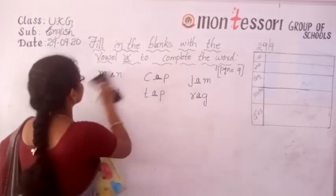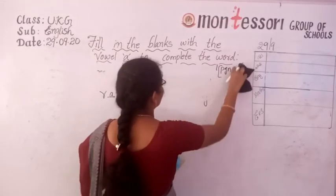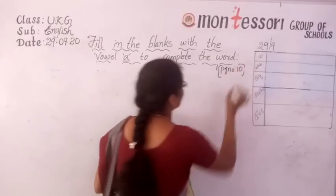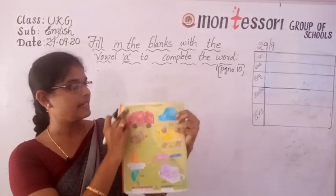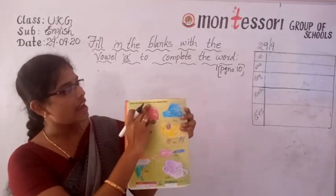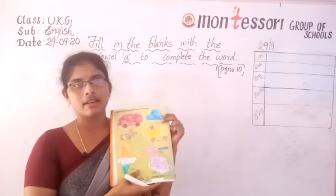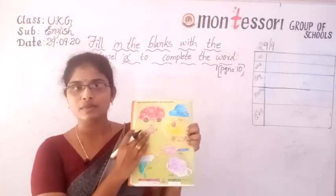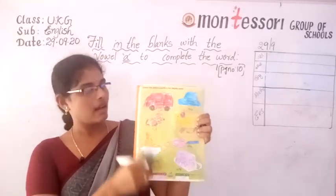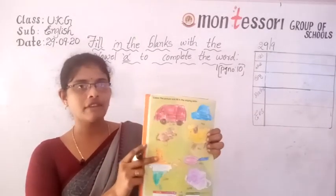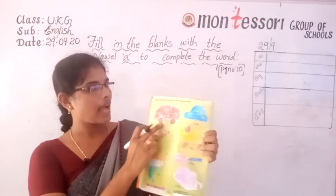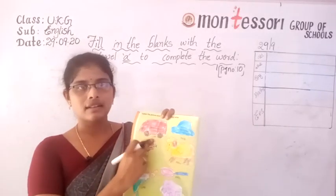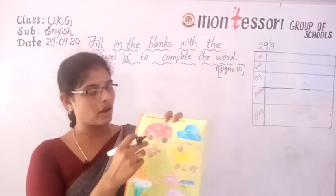Now all of you turn to page number 10. What did they give? Color the picture and fill in the missing letters. Some pictures are given. I am showing here how to color the pictures. We have to color like this and fill in the letters. In class I will tell which letter is missing, and after the class you take some crayons and color it.